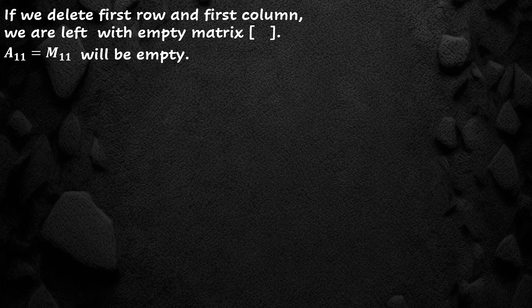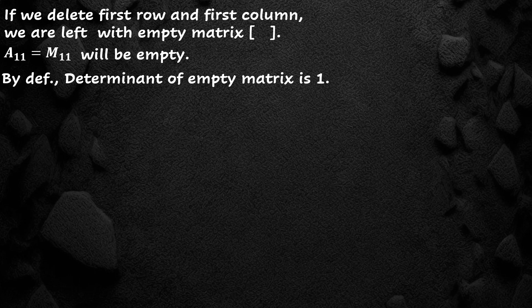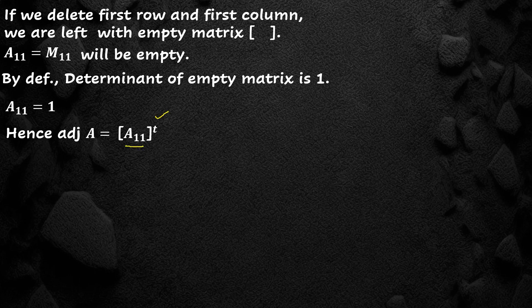So, A11 and M11 will be empty. But by definition, the determinant of an empty matrix is 1. Therefore, A11 will be equal to 1. We also know that the adjoint of A is the transpose of the matrix of cofactors. Since A11 equals 1, we replace it with 1, and the transpose of this matrix will also be 1. Therefore, adjoint of A is equal to 1.